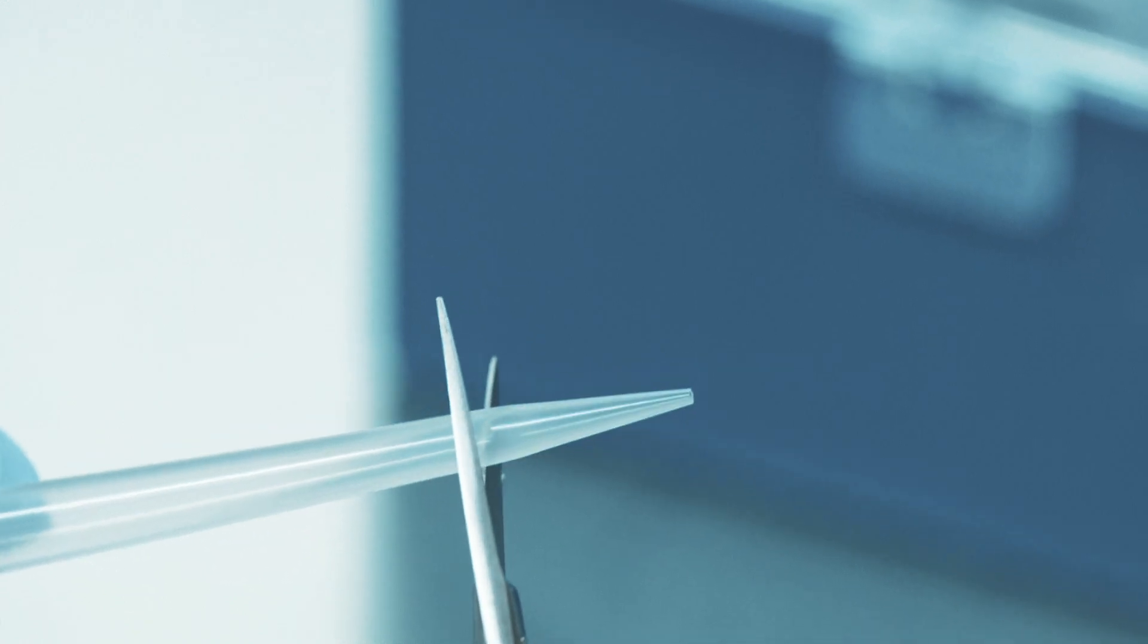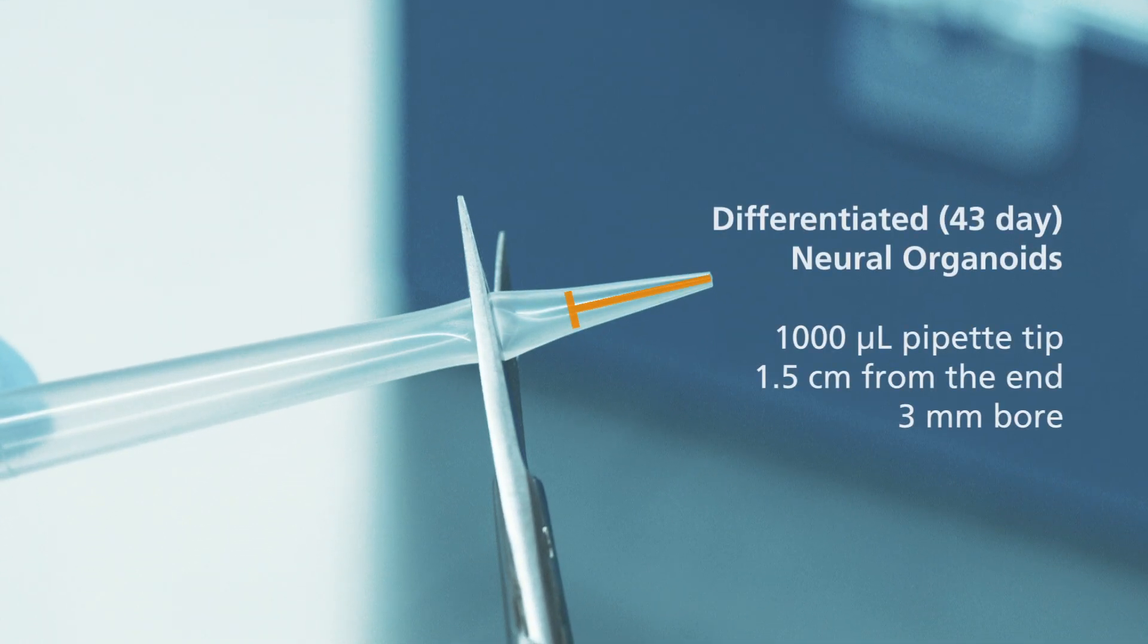For differentiated neural organoids, we recommend cutting a standard 1000 µl pipette tip approximately 1.5 cm from the end to create a 3 mm sized bore.